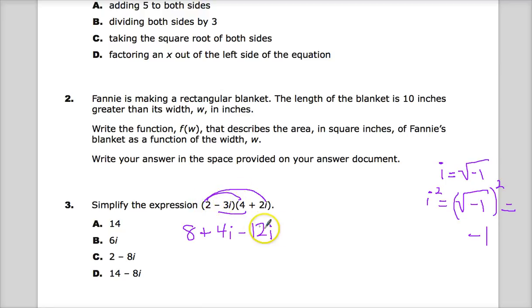Then negative 3i times 4 gives you negative 12i. Negative 3i times positive 2i gives me negative 6i squared. Now, the first thing I'm going to do is look for any like terms. And you can treat the i, in this case, almost like a variable.